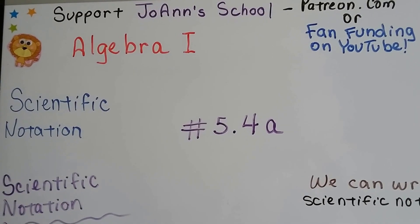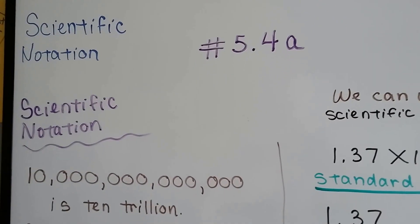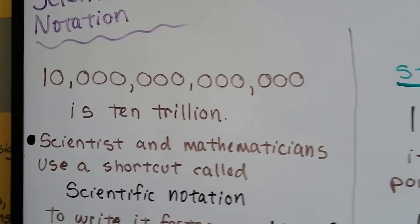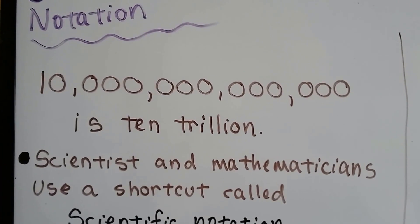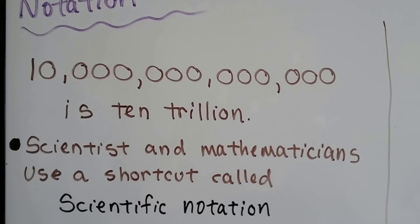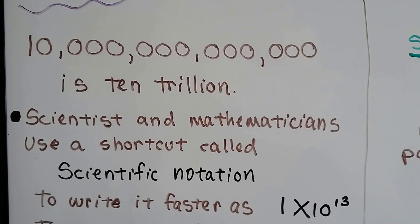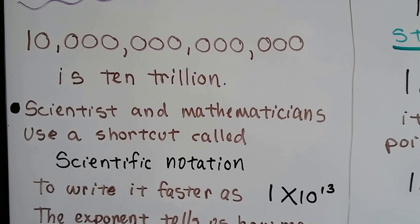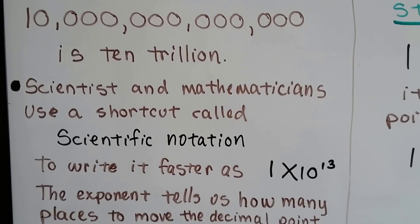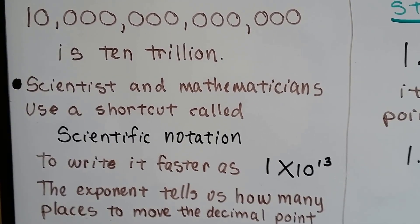Algebra 1 number 5.4a — we're talking about scientific notation. We talked about this a little bit in eighth grade. Take a look at this big huge number here. This is 10 trillion. Scientists and mathematicians use a shortcut called scientific notation to write it faster as 1 times 10 to the 13th power. The exponent tells us how many places to move the decimal point.